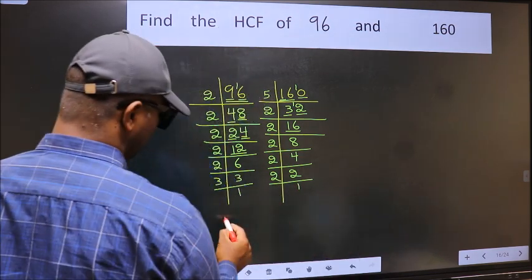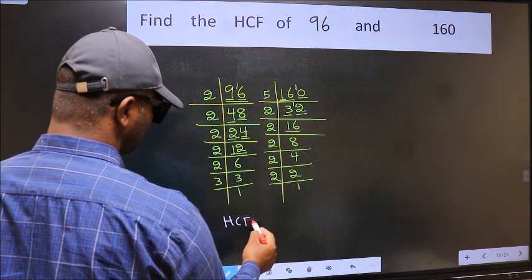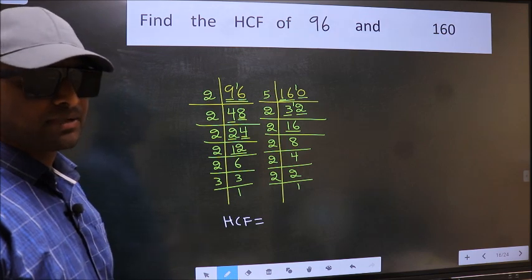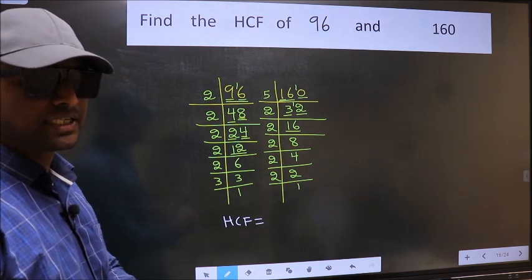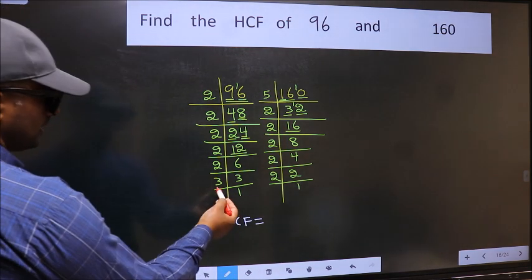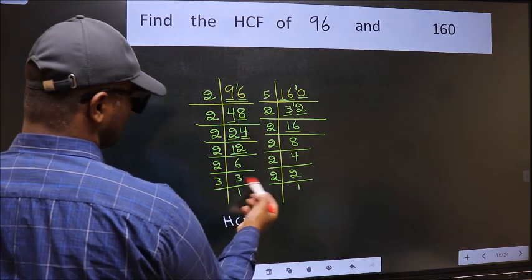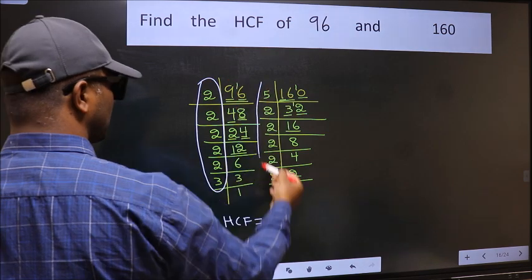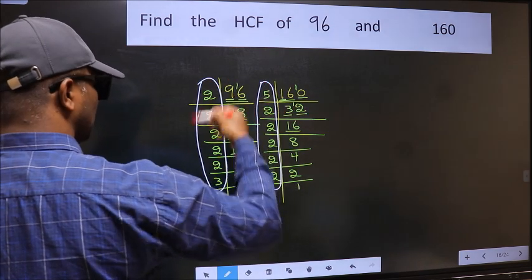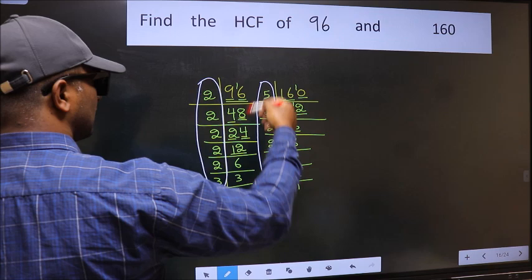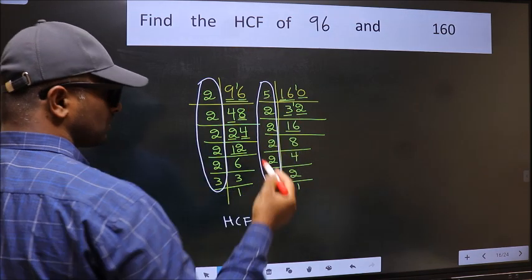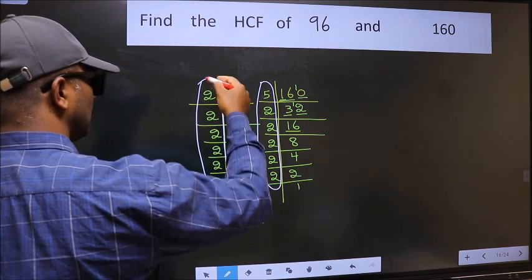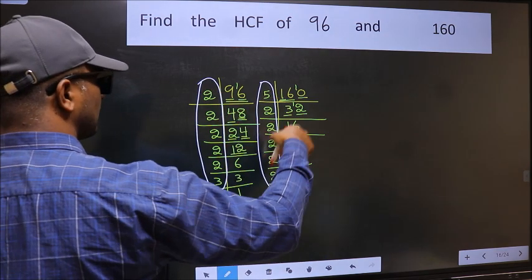Therefore our HCF is the product of the numbers which should be present in these two places, that is here and also here. Here and here. So now let us find the numbers which should be present here and here.